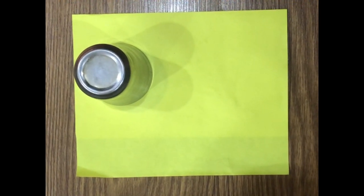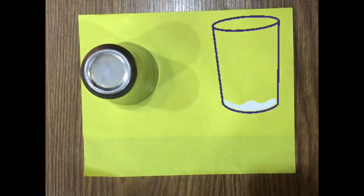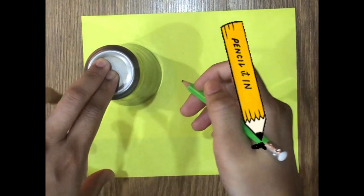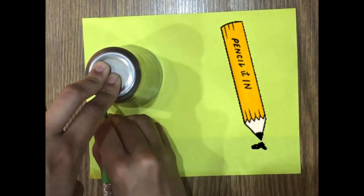To begin with, take a sheet of paper. Using a glass and pencil, trace a few circles for making the bird.